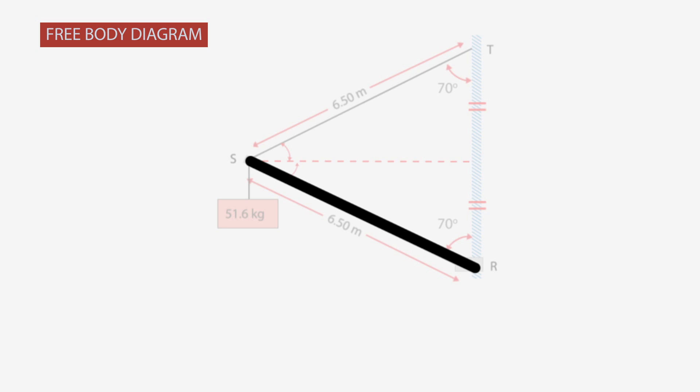So the tension force - with a rope you can only pull on a rope. So that tension force has to be directed up and right. Since it's tension in the cable, it's going to pull at point S.